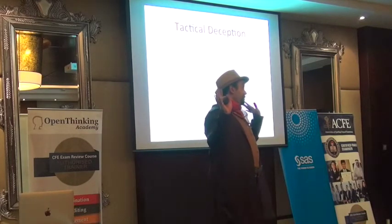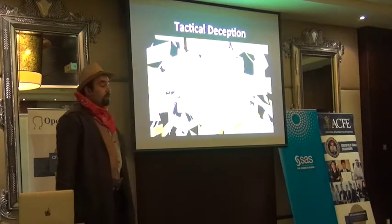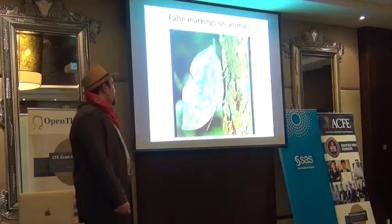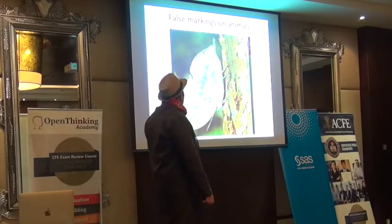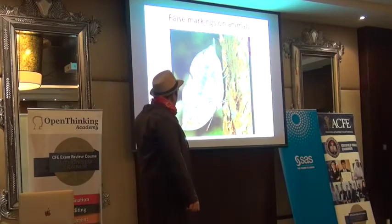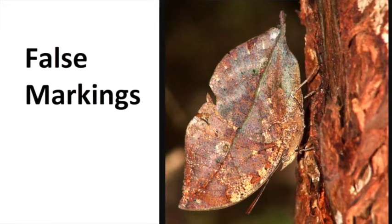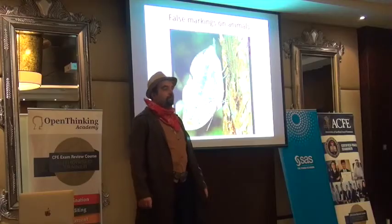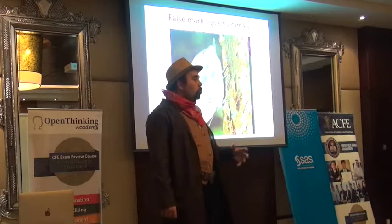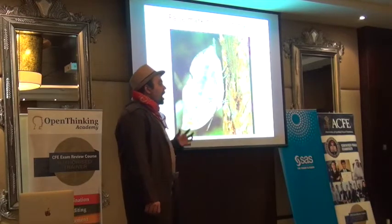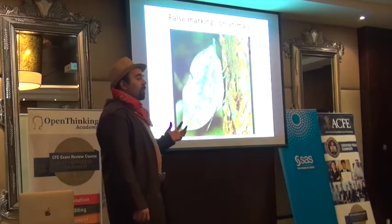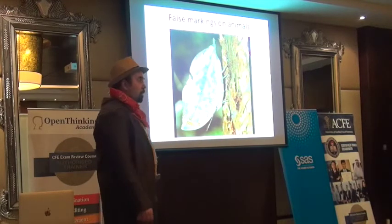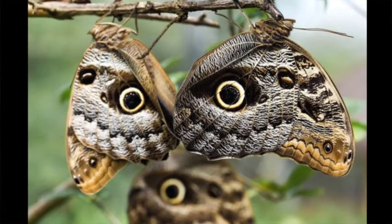Let's discuss what kinds of deceptions happen in the jungle. One type is called false markings on animals. Can you see this butterfly? It looks exactly like a leaf, so no one will come and eat it. It understood that in nature, to survive, sometimes you need to hide yourself by creating marks on yourself — by changing your nature.